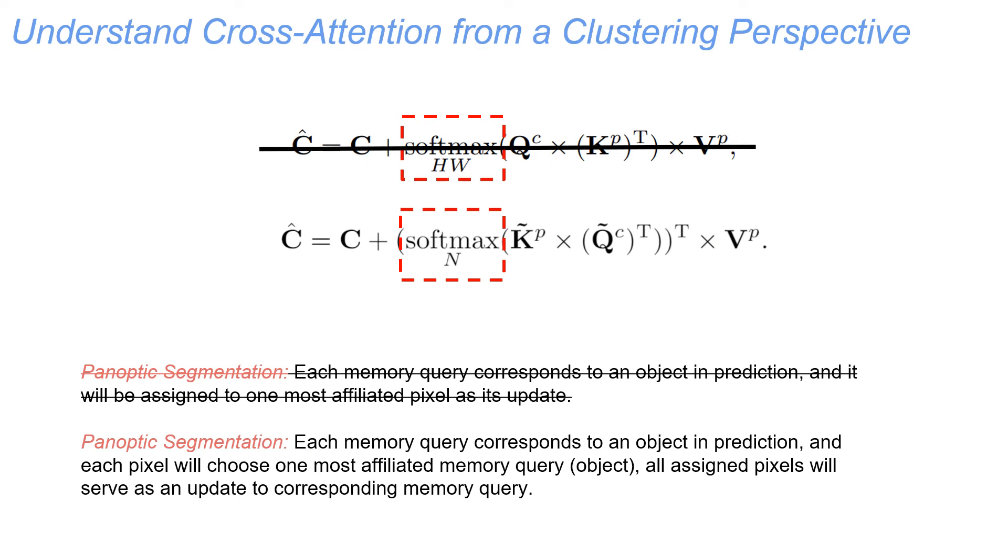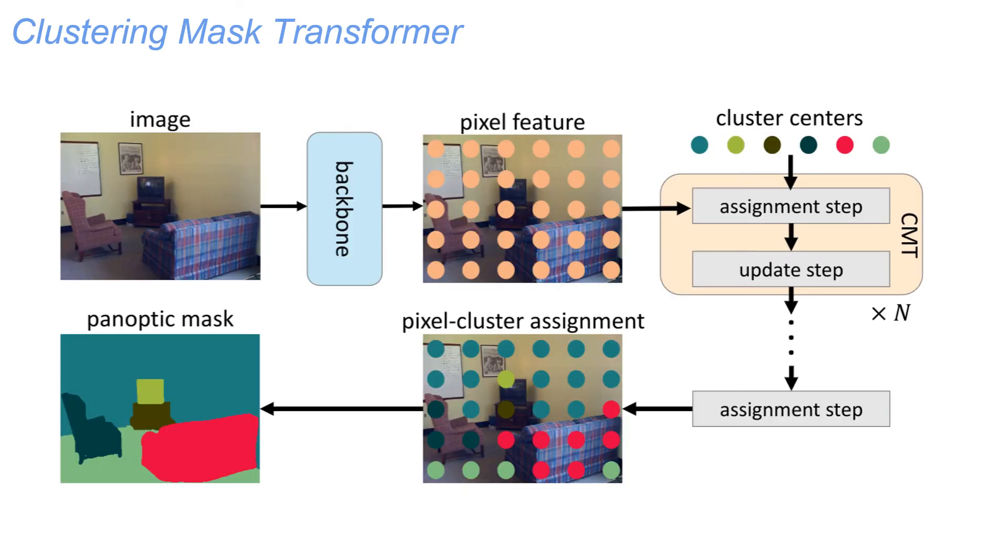Therefore, by simply changing the axis of softmax, we can have a cluster attention that is better aligned to the clustering interpretation. From our macro-level design, we further reformulate the entire mask transformer framework from our clustering perspective, where it performs the assignment and update steps iteratively. Finally, the final pixel-cluster assignment corresponds to the prediction mask.